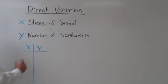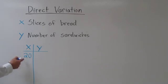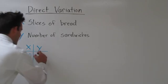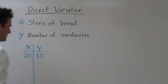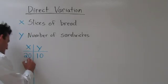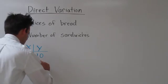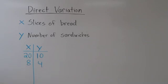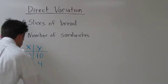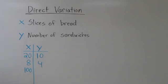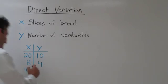So if I had 20 slices of bread, how many sandwiches could I make? Well, each sandwich requires two slices of bread, so I could make 10 sandwiches before I used up all 20 slices. What if I had only 8 slices of bread? Then I could make 4 sandwiches. What if I had 100 slices of bread? Then I could make 50 sandwiches.